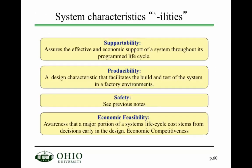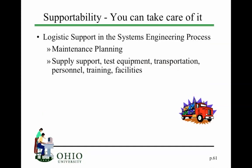A couple of other abilities are supportability, producibility, safety, and economic feasibility. Economic feasibility: a major portion of your system lifecycle cost stems from decisions made early in design, so spending time developing good requirements early may save cost later. Supportability, simply put, means you can take care of the system — maintenance planning is doable, you can buy test equipment, transport certain systems easily. If the system requires training, there are training facilities available, and in operation you can call support for technical assistance.